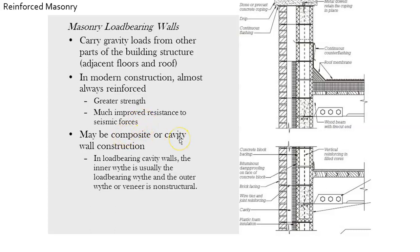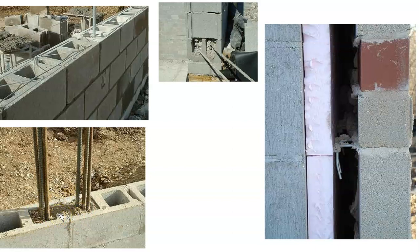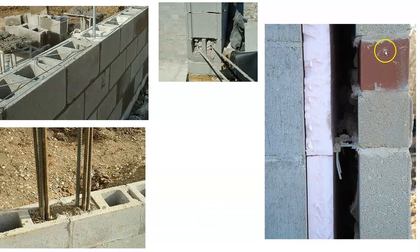Masonry load-bearing walls carry gravity loads from one part of the structure to the other, from the roof all the way down. The wall could be composite or cavity — we just looked at those two options. Here are more images of reinforcement showing horizontal and vertical dowels coming through, and a bond beam being created at the base of a wall. We can see the outer wythe tying through the insulation to the inner wythe.